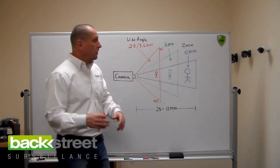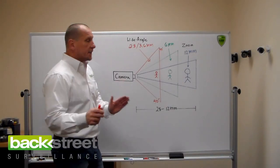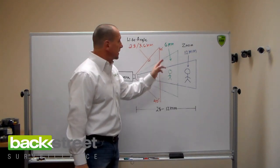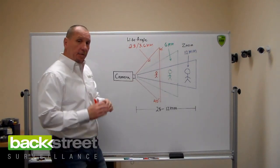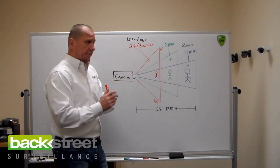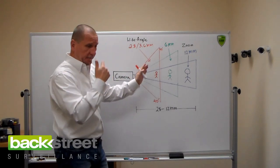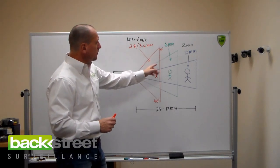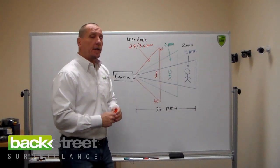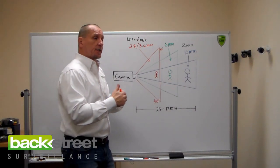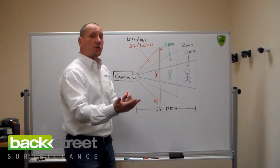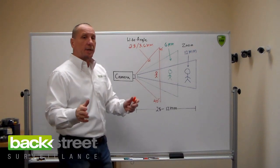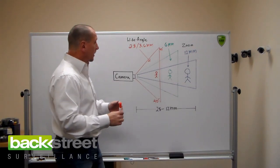Okay, so back to the normal view here. So the rule is this, the key distance is 40 feet. If you need to see detail and identify facial recognition at 40 feet or further, you need to be able to adjust the zoom lens. You need a zoom lens. Zoom lenses are affordable, and we'll talk about them in a second here.